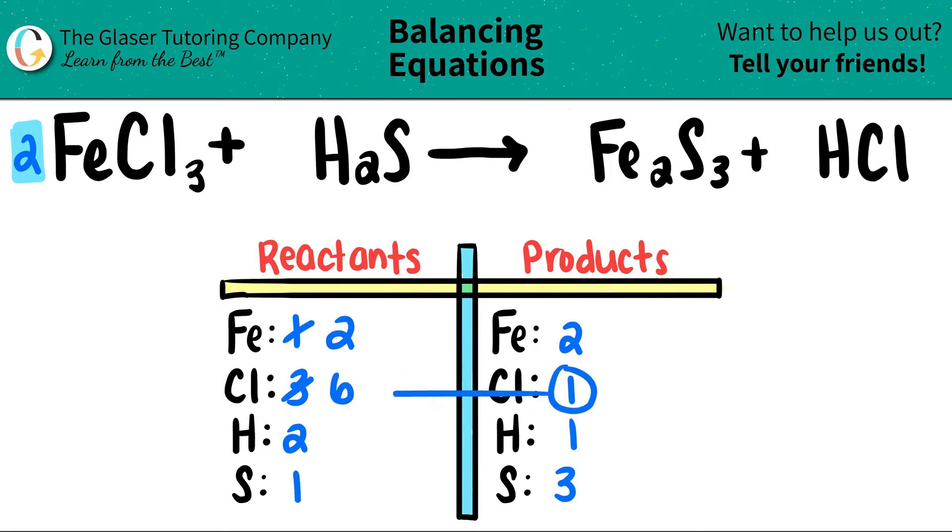Always go from the lower to the higher number. One times what will get me to six? One times six. And the number that you said is the coefficient for the compound that has that element. So I'm going to put a six here. But since it's a compound, I have to be fair. I have to change the hydrogen and the chlorine number.